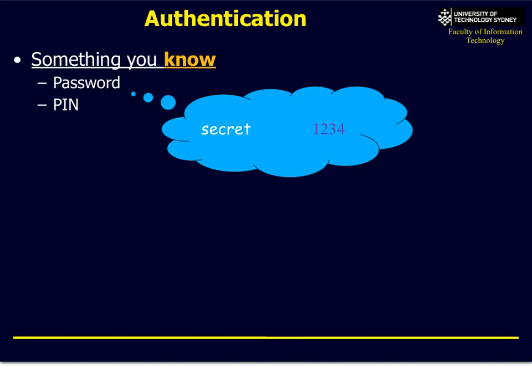Probably the most obvious one is a password or a PIN number. You go to a website, type in your user ID and password — that's something that you know and hopefully you've never shared with anybody else. When I go to an ATM, I type in my PIN code. Only I know that PIN code — well, maybe my wife does too, but hopefully not.